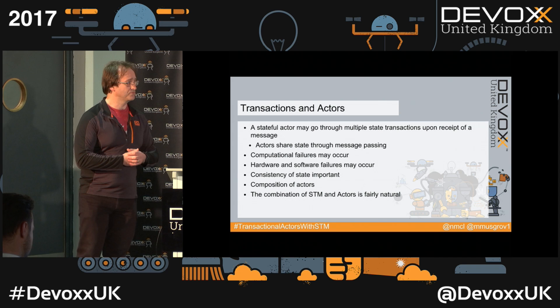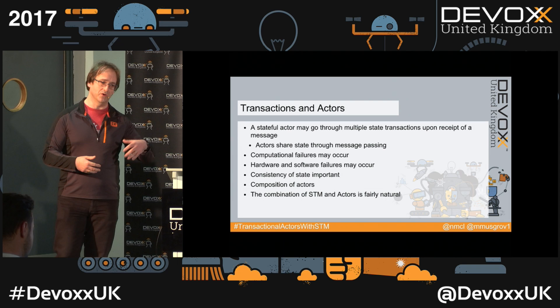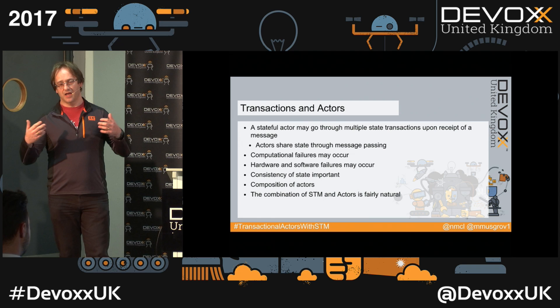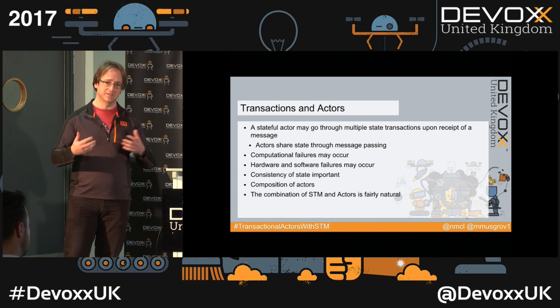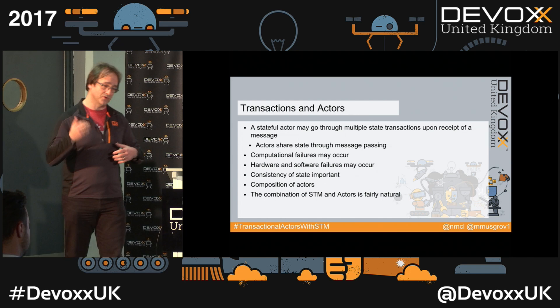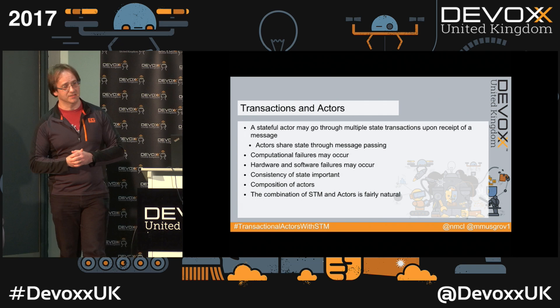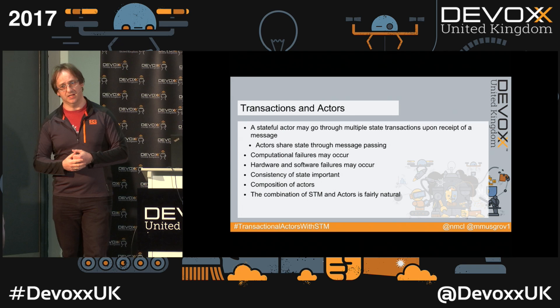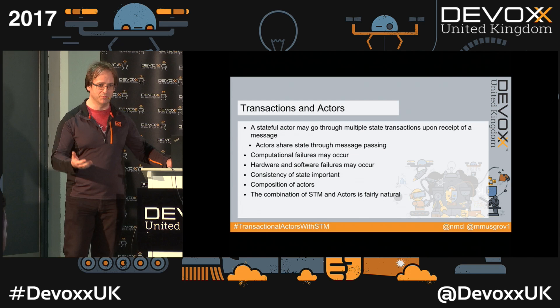Consistency of state changes is very important whether you use an actor model or not. Even in a single-threaded environment, or one with multiple threads accessing the same state, you need a level of consistency with or without failures. Adding failures makes it even more important. The combination of transactions and actors is very natural — and combining software transactional memory with actors is even more natural, since both are simpler programming models.